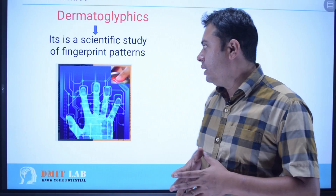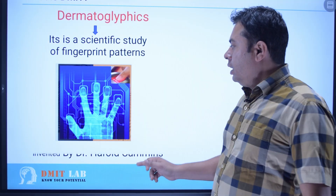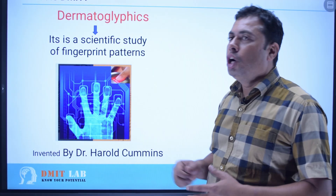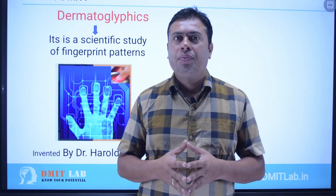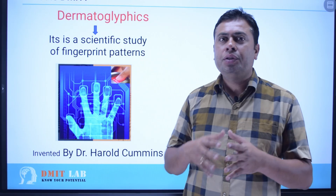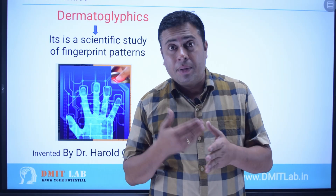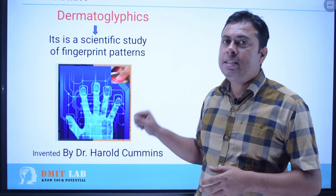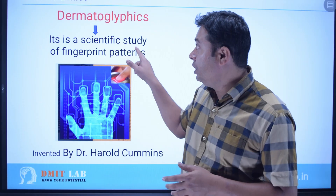Dermatoglyphics was introduced by Dr. Harald Cummins. He was a chief athletic head of Russia and used to select candidates for athletics. He introduced the concept that there are different types of patterns and uniqueness in persons that we can identify from fingerprints. As a scientist and chief athletic head, he introduced dermatoglyphics.